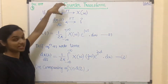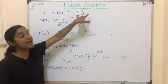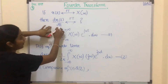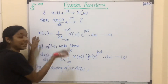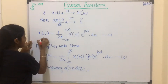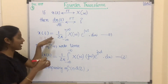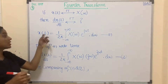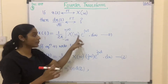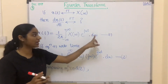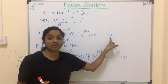In the question it is given that the Fourier transform of x(t) is X(ω), and we have to find the Fourier transform of dx(t)/dt. First let us write the inverse Fourier transform. The formula is: x(t) = (1/2π) × integral from minus infinity to infinity of X(ω) · e^(jωt) dω. I am marking this as equation number 1.